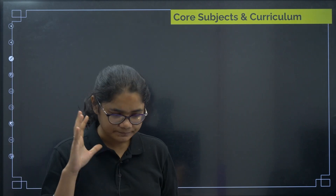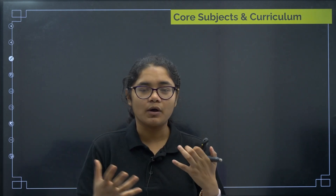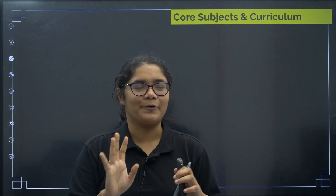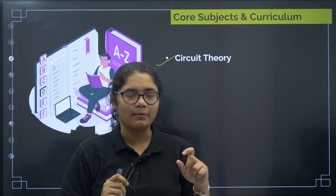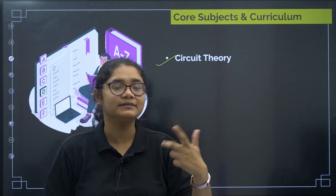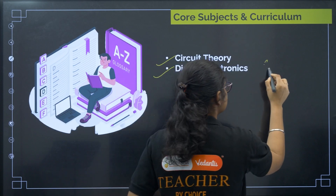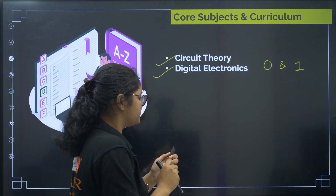Now coming to the core subjects and curriculum. To become an Electronics and Communication Engineer, you will study subjects like Circuit Theory, where you learn about resistors, inductors, and capacitors in integrated circuits. In Digital Electronics, you learn how to represent information in terms of 0s and 1s, including logic gates like NAND gates and AND gates.